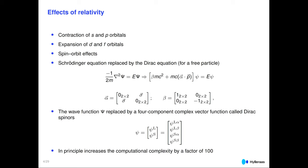By using techniques to remove the small components — which describe the positronic solutions of the Dirac equation — and focusing only on the large component, you can get the computational cost down to a factor of two compared to a non-relativistic calculation. We are coming to a point where doing full relativistic calculations is not significantly more expensive than non-relativistic calculations, and in many cases relativistic effects are significant and should be included.